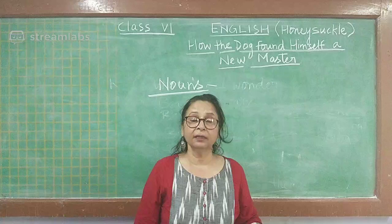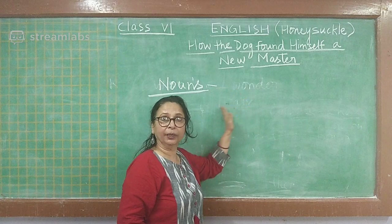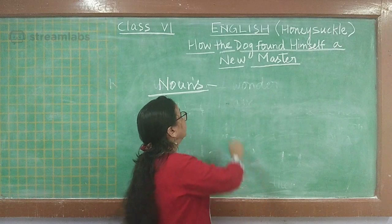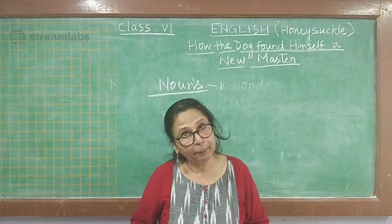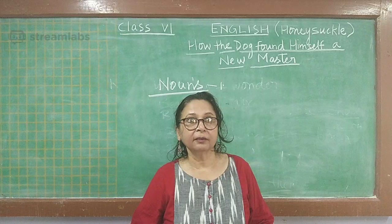A noun is a naming word — it can be a person, place, animal, or thing. Any word that tells us a name is a noun. Types of nouns: first, common noun — which is common, like fan, table, boy, girl. It can be singular or plural. For example, 'boy' becomes 'boys.'